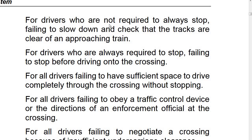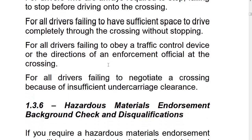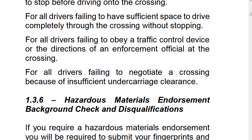For drivers who are not required to always stop: failing to slow down and check that the tracks are clear of an approaching train. For drivers who are always required to stop: failing to stop before driving onto the crossing. For all drivers: failing to have sufficient space to drive completely through the crossing without stopping; failing to obey a traffic control device or the directions of an enforcement official at the crossing; failing to negotiate a crossing because of insufficient undercarriage clearance.